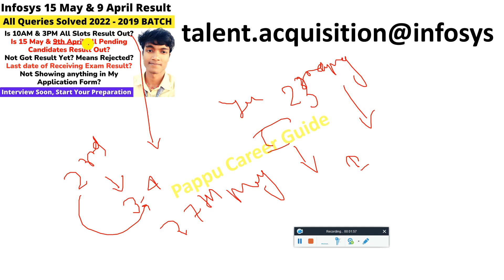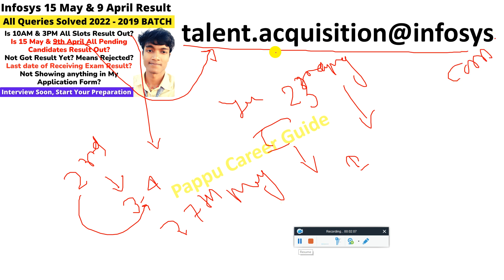For 9th April candidates, I request all of you to try mailing talent.acquisition@infosys.com regarding your exam result, if you haven't received either a rejection or selection mail. But only try to mail if you had given your exam, got a shortlisted mail, and have already given your interview.